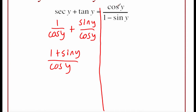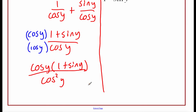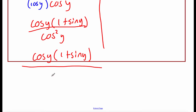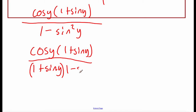Looking at the right-hand side, we're eventually going to need a cosine on top. So I'm going to multiply top and bottom by cosine of y. I'll leave the top as cosine of y times 1 plus sine of y for now. On the bottom, cosine times cosine is cosine squared of y. Using a Pythagorean identity on the denominator, cosine squared of y is the same as 1 minus sine squared of y. We notice the denominator is a difference of perfect squares, so factoring gives us 1 plus sine of y times 1 minus sine of y on the bottom.